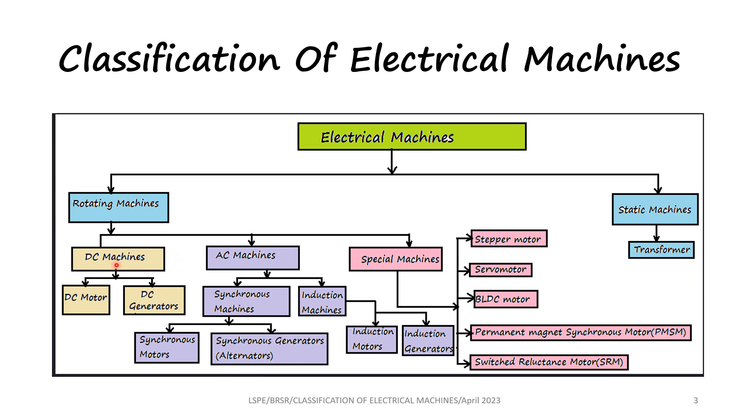DC machines can be further classified as a DC motor or a DC generator. Motors generally convert electrical energy to mechanical energy. Generators convert mechanical energy to electrical energy.